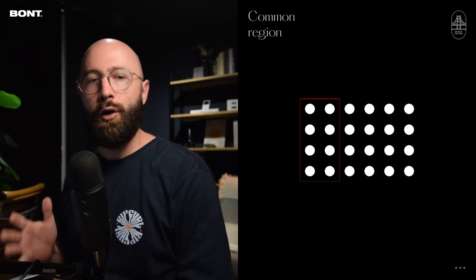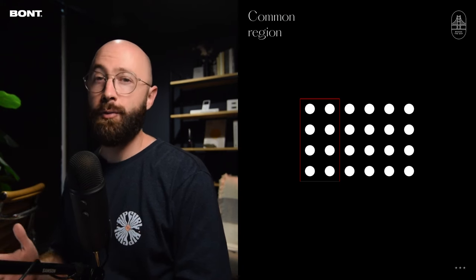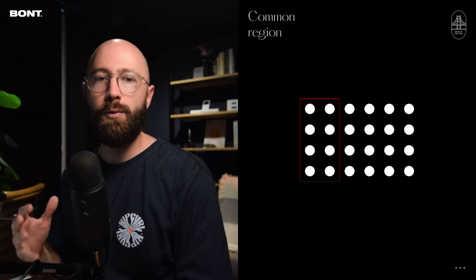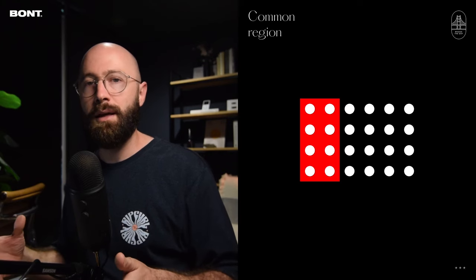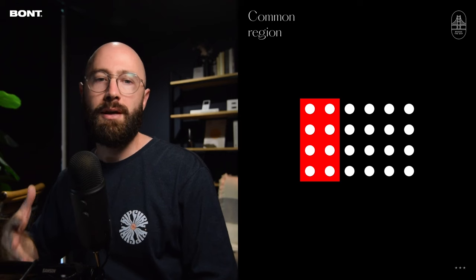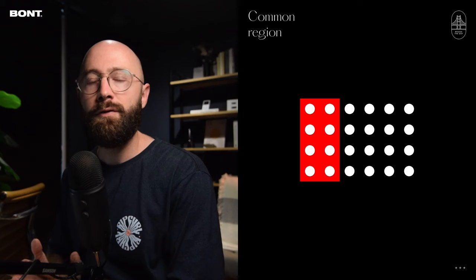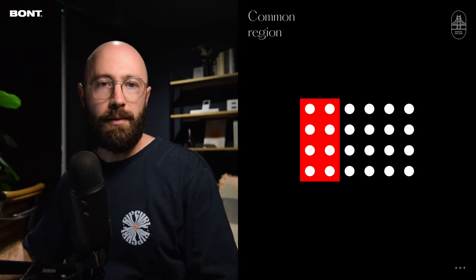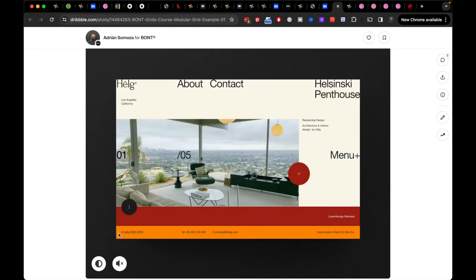Law number eight, common region. Objects located in the same area, separated from other objects, are perceived as related to each other. Adding a border around an element or group of elements, or defining a background behind them, creates a shared area. This principle is often found in interface elements such as navigation bars, menus, and forms. For example, footer elements connected by the same background color, and menu elements that feel related when they appear on a shared white background when the menu opens.